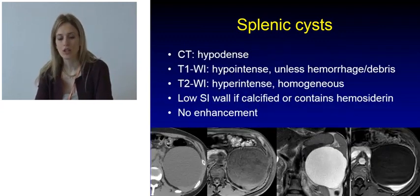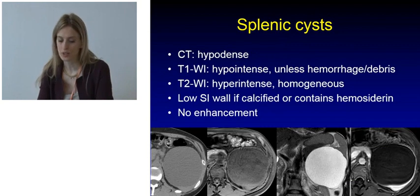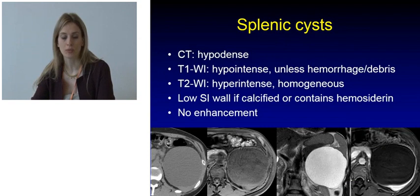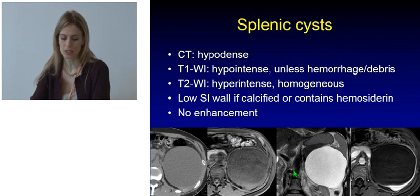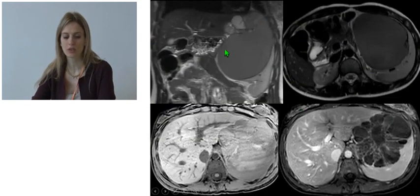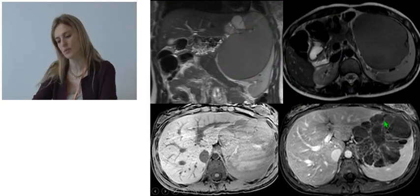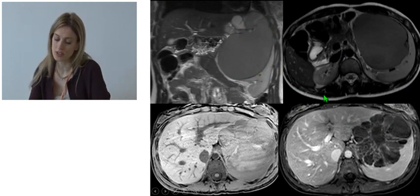On CT, cysts are going to be hypoattenuating. On MRI, they're going to be hypo-intense on T1-weighted images and hyper-intense on T2-weighted images. The wall is going to have a low signal intensity if there are calcifications or hemosiderin. Cysts typically show no enhancement, as we can see in this case of a large unilocular cyst and in this other case of a multi-loculated cyst with varying content in different loculations due to different protein content, with some slight enhancement of the septa.